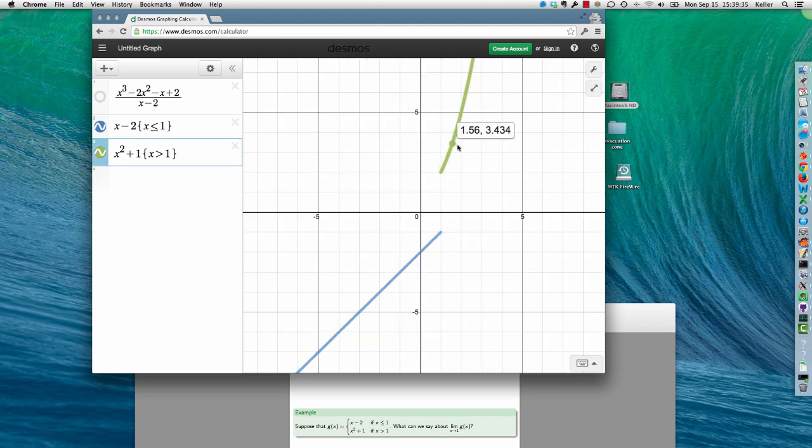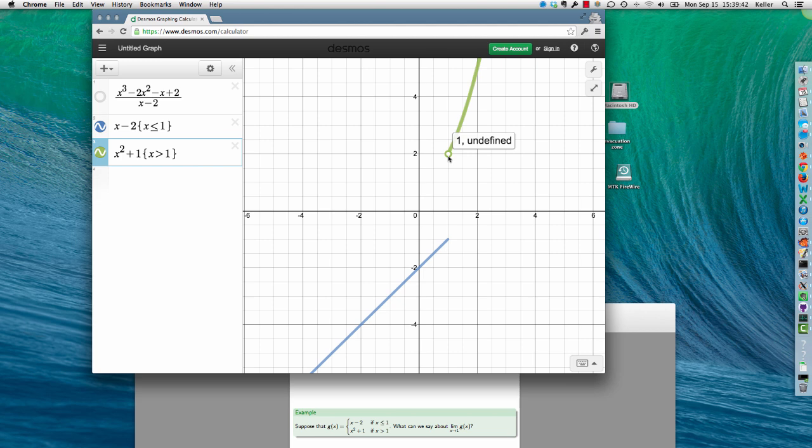But as we come in from up here, notice that g(x) is approaching positive 2. And notice we get to 1, and the green part is undefined there. But the blue and the green together are what we call g(x), and that's defined to be minus 1 down here.